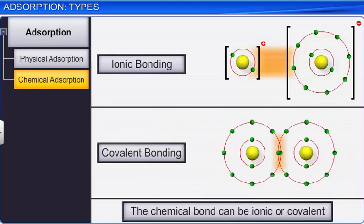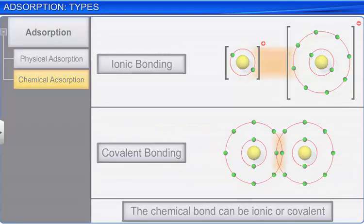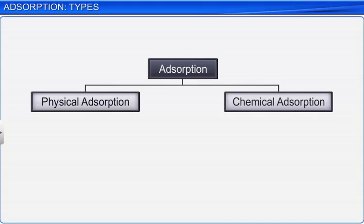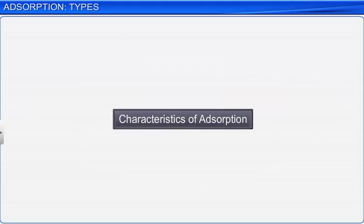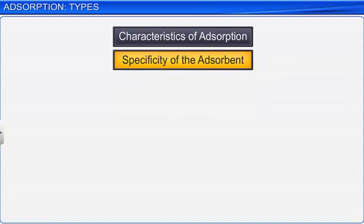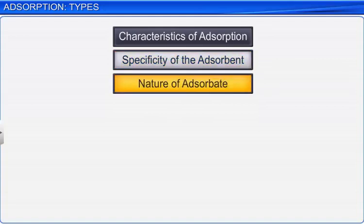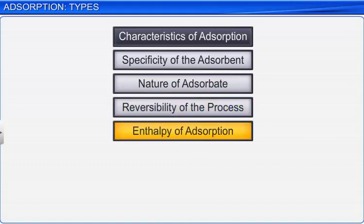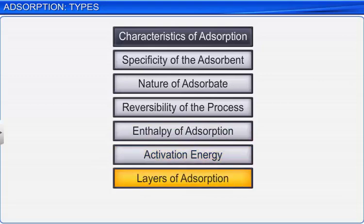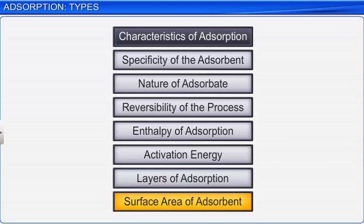In some cases, both physical and chemical adsorption may take place at the same time and it may not be possible to identify the type. The basic characteristics of adsorption depend on the specificity of the adsorbent, nature of the adsorbate, reversibility of the process, enthalpy of adsorption, activation energy, layers of adsorption, and surface area of the adsorbent.